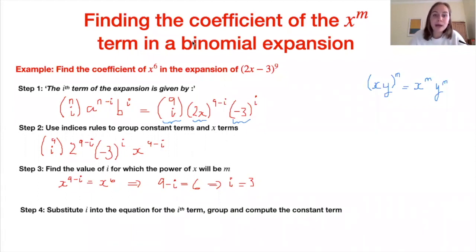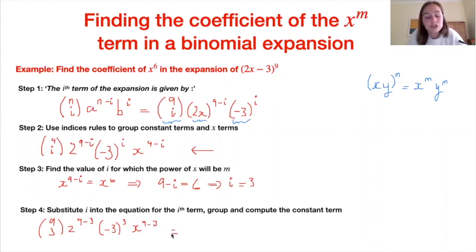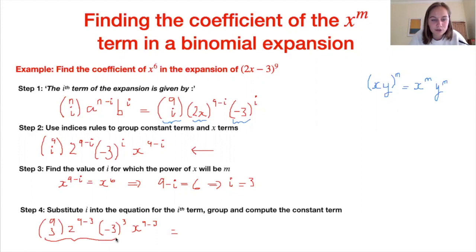Substituting i = 3 back into our expression for the ith term: 9 choose 3 × 2^(9−3) × (−3)^3 × x^(9−3). Since this is a Paper 2 question, we can use a calculator. Working out the coefficient: 9 choose 3 × 2⁶ × (−3)³ gives −145152. So the answer is −145152 × x⁶.